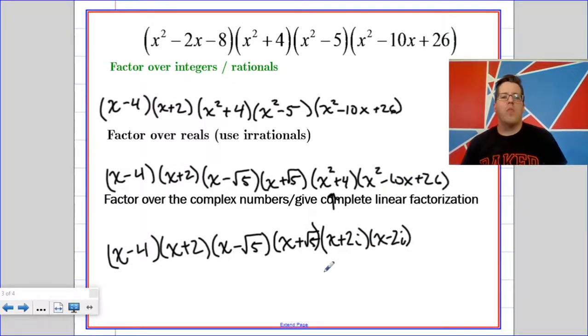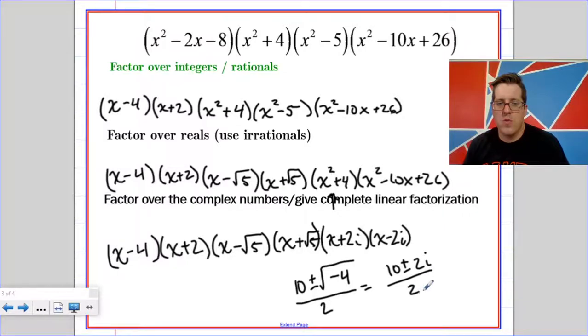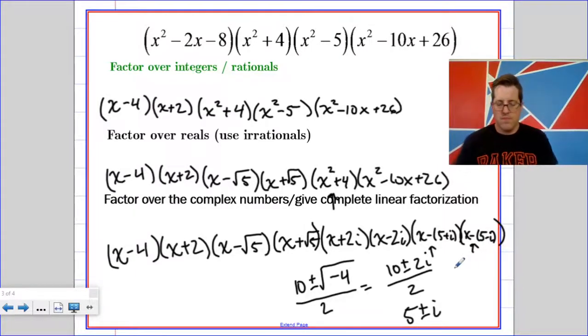Okay, for x squared minus 10x plus 26, you can plug that into the quadratic formula. We already found that the discriminant was going to be negative 4. So I'm going to get 10 plus or minus 2i all over 2 or 5 plus or minus i. Okay, now this is the part that you really have to pay attention to because this is what throws people off. If these are your zeros, then your factors are x minus 5 plus i and x minus 5 minus i. They're both minuses. That really throws people off sometimes.